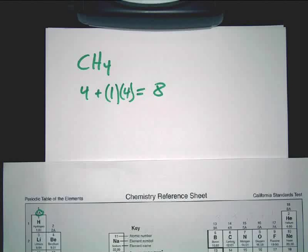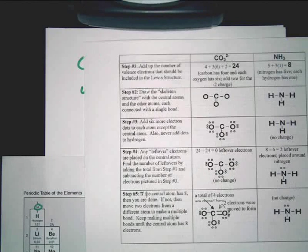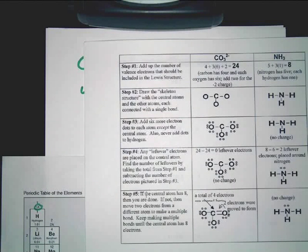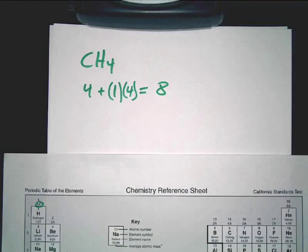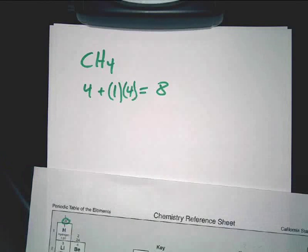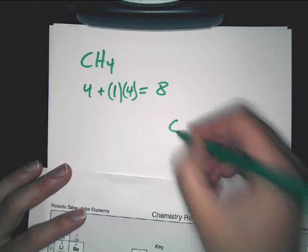Now methane's the simplest Lewis dot structure that exists, basically. I can't think of an easier one to do. That's why we're starting out with it. Now to go through this, all you've got to do is step two: draw the skeleton structure. You think it's C in the middle, right? Because there's one of those and four hydrogens. So you just put C in the middle.